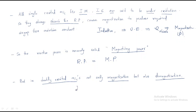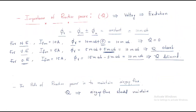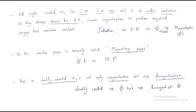In doubly-excited machines, not only magnetization but also demagnetization is done. The machine should release the flux — demagnetization is also done here. It loses its flux and gives it to the other machine. This is the importance of reactive power.